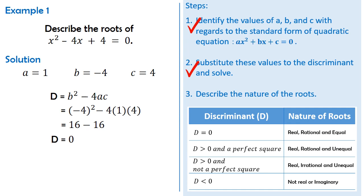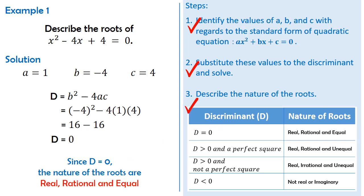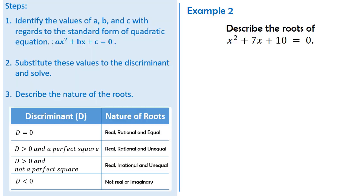Since the discriminant is equal to zero, therefore the nature of the two roots are real, rational, and equal. This can be checked by determining the roots of the given quadratic equation using any of the methods of solving quadratic equations. Let us have another example.